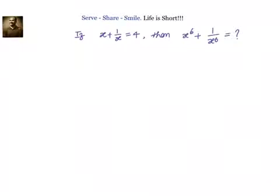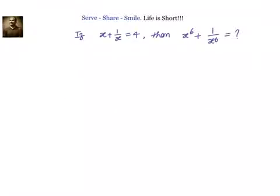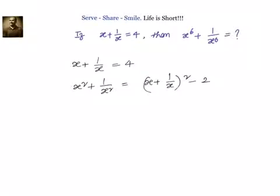In the first method, we will first find out x square plus 1 by x square, then find x power 6 plus 1 by x power 6 by cubing that result. In the second method, we will start with x cube plus 1 by x cube, then square it to get x power 6 plus 1 by x power 6. Starting with Method 1: x plus 1 by x equals 4, so x square plus 1 by x square equals (x plus 1 by x) whole square minus 2, which equals 4 square minus 2, which equals 14.